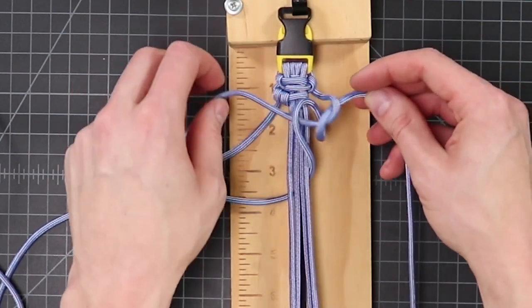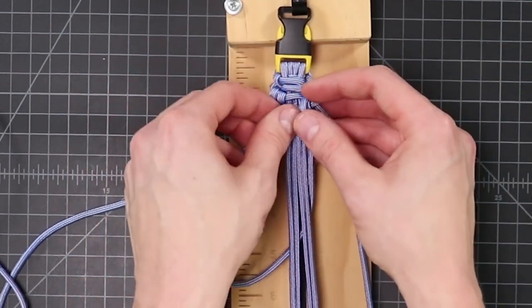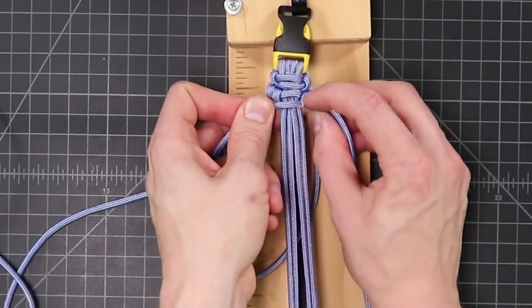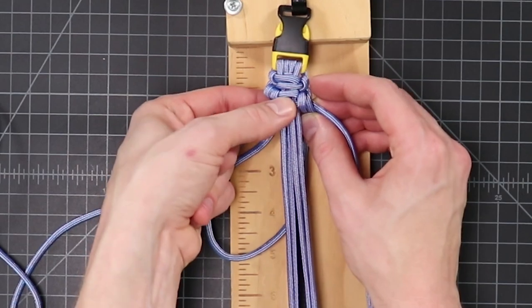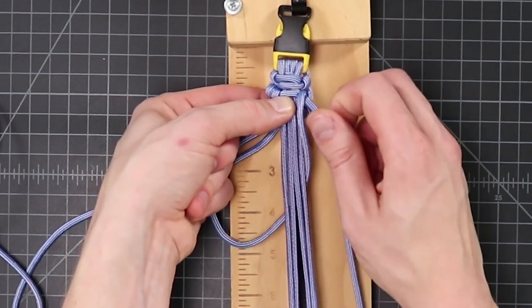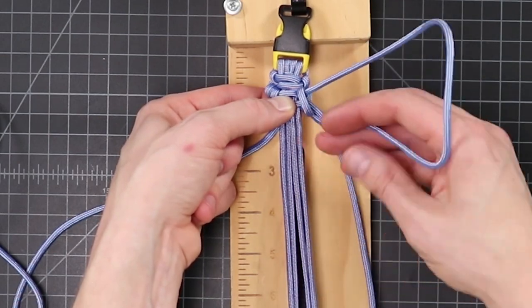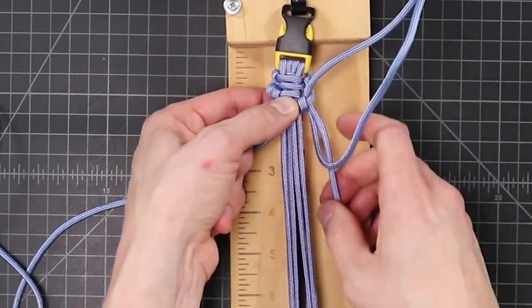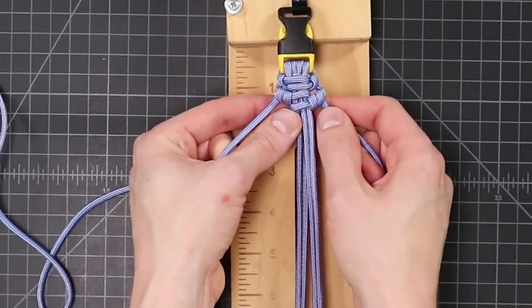Pull that original loop tight first. Trying to not get our two bumps to lay on top of each other. Wrap it around. Hold it with our thumb. And then bring the slack through one pass at a time.